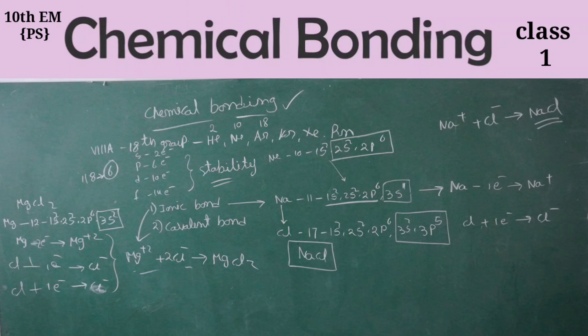The outermost orbital is full of electrons. The outermost orbital is the p-orbital, which holds 6 electrons. The outermost orbital can also be the d-orbital, which holds 10 electrons when completely filled.